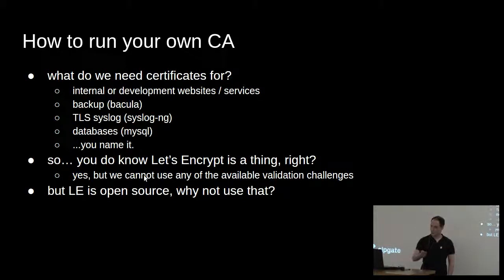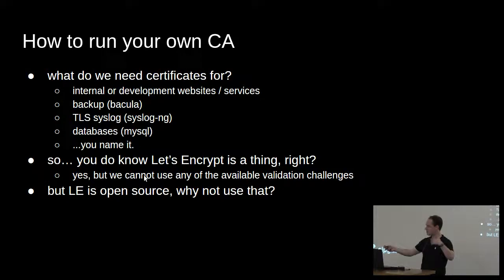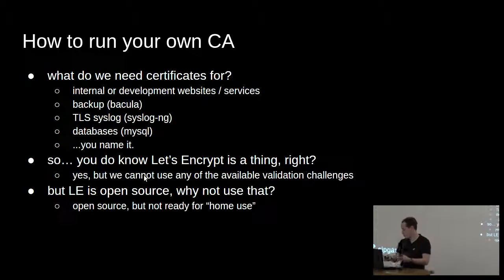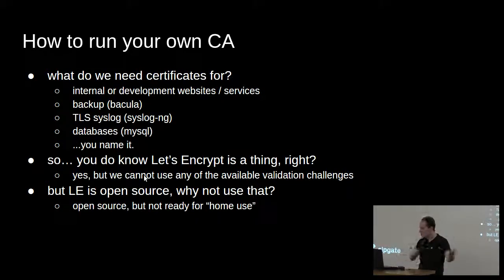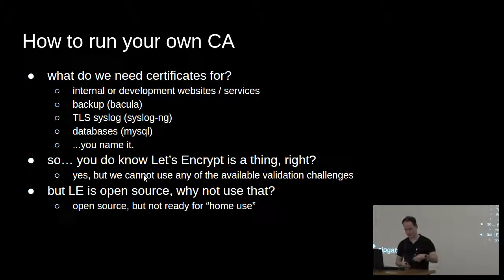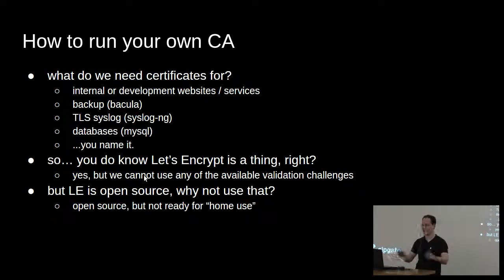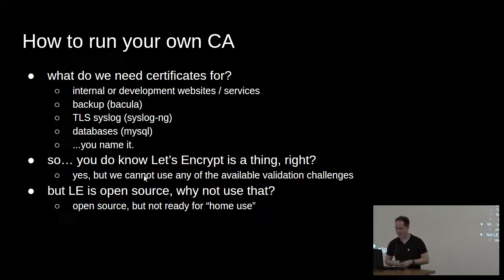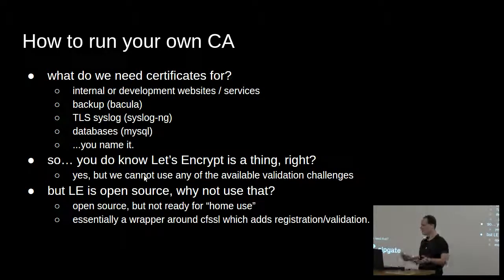Let's Encrypt is open source — they have something called an ACME server which is open source. Why not just use that? If you browse their forums you'll see lots of people asking that question. The answer is always: yes it's open source, but it's not ready for home use. There's no real documentation; they have a Docker container only for development. We tried to evaluate it. On day one we started; on day three they added an entire RabbitMQ system somewhere in the middle of it without telling anyone — it wasn't in their readme. So we just didn't know why everything broke. At the end, the ACME server is just a wrapper around CFSSL anyway.